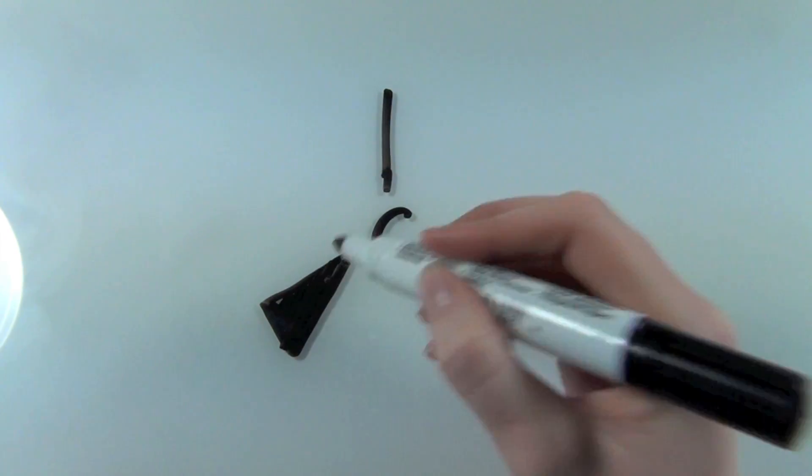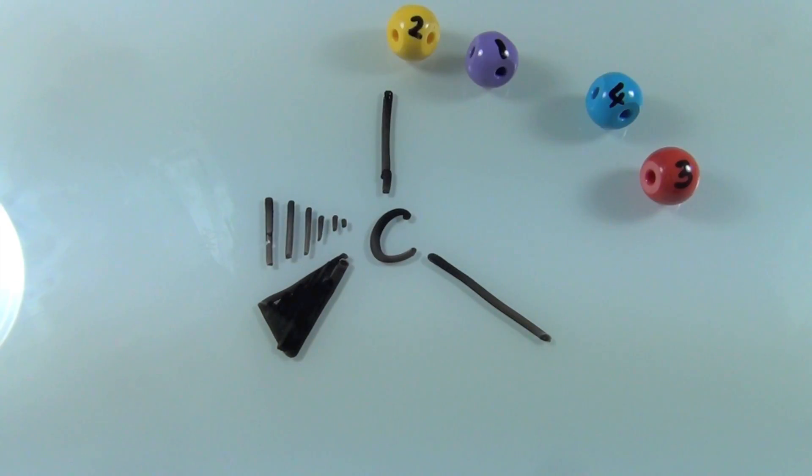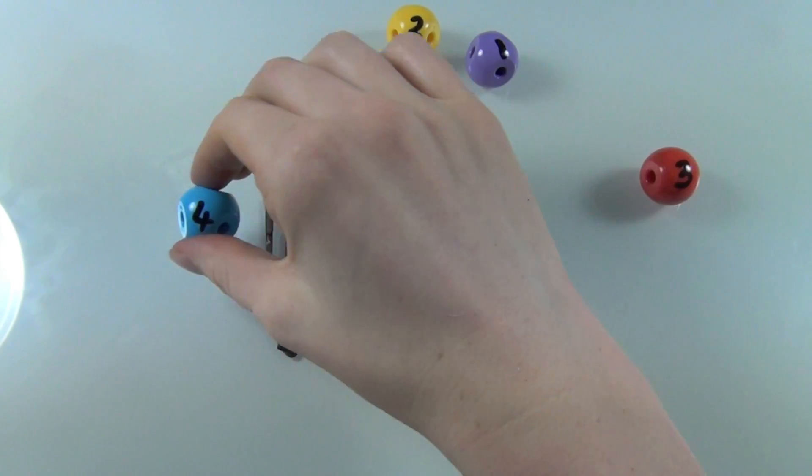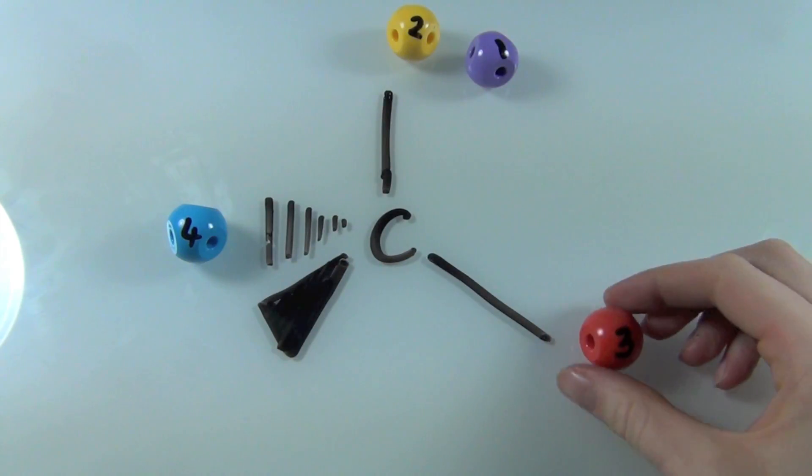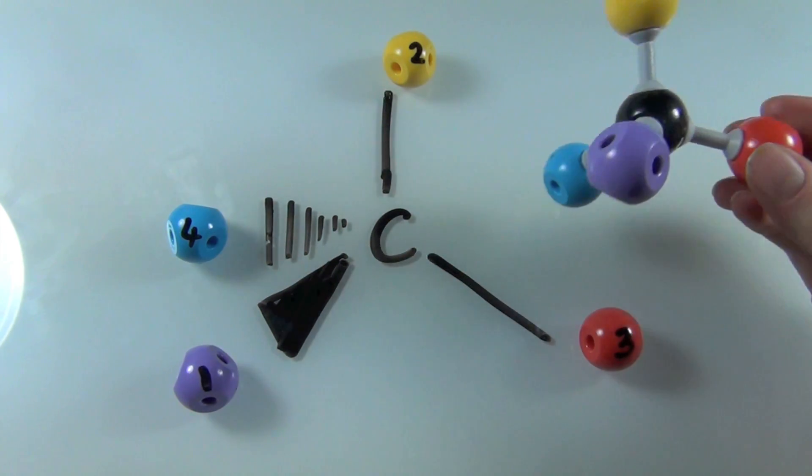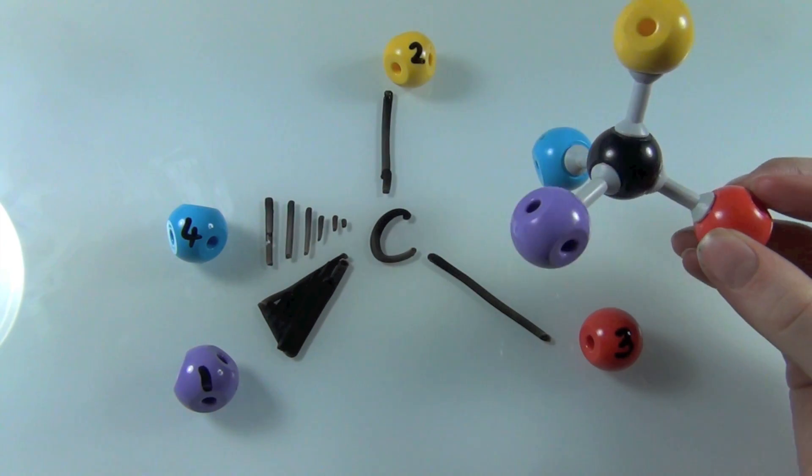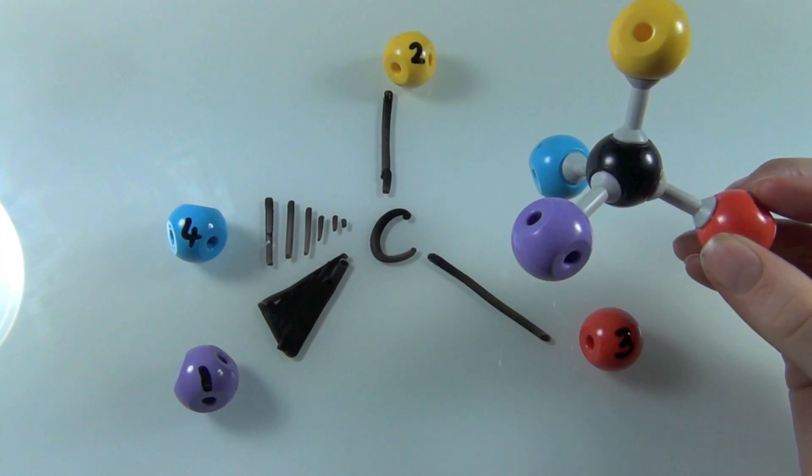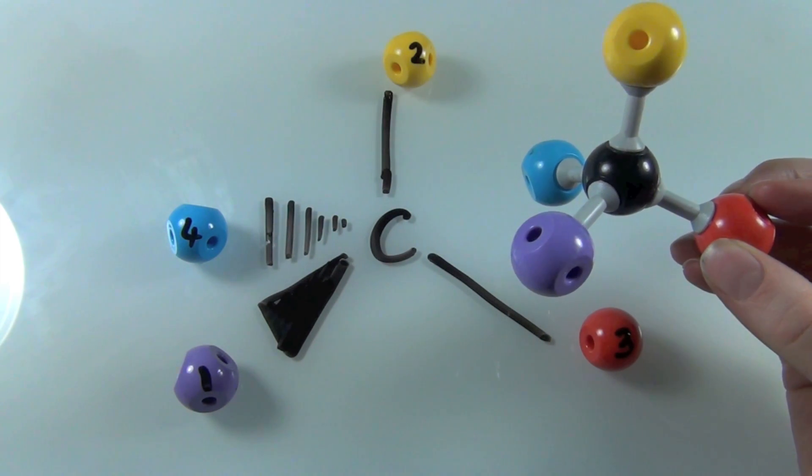So now moving on to how to assign absolute configurations when the molecule is drawn on paper. So if you're not quite sure how molecules are represented on paper, then what you need to know is that the colored in triangle means that that group is pointing at you. That group is coming out of the page and it's pointing at you. And the series of vertical lines means that that group is pointing away from you. It's pointing out behind the page. So hopefully comparing the picture of the molecule with the model of the molecule will help you understand that.